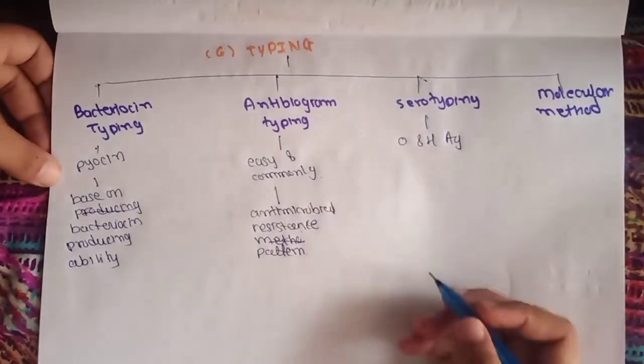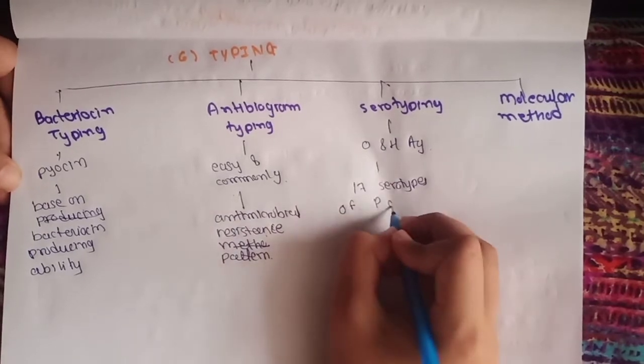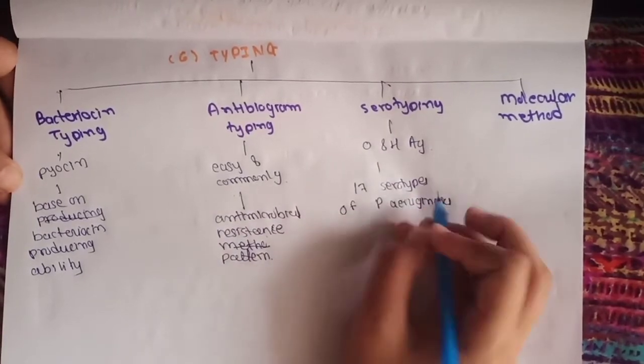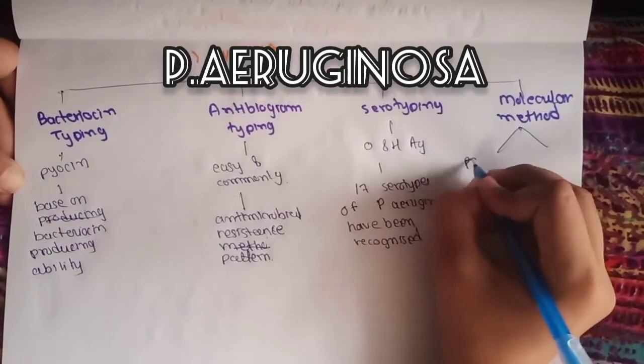Serotyping is based on O and H antigens, and we have recognized 17 serotypes of Pseudomonas aeruginosa with the help of this method.